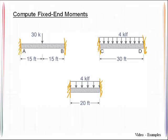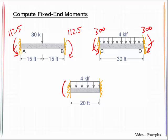So let's come back here and let's go ahead and write those on. We get that 112.5, 112.5, 300, all these have units of kip feet. And the 133.3.